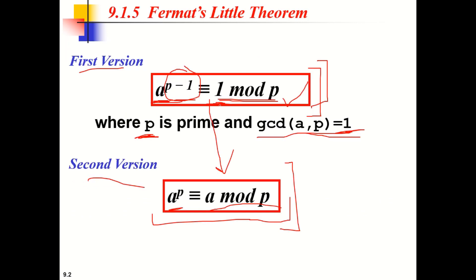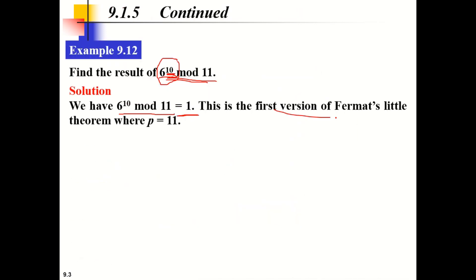This is congruent to 1 mod N. So we can write this expression — 6 raised to 10 mod 11 — in this form. Here P is 11, A is 6, P minus 1 is 10, and P is 11. So the first version of Fermat's theorem holds true, and simply by using the theorem without any calculation, we can find that its value is 1. That is how these theorems help us.